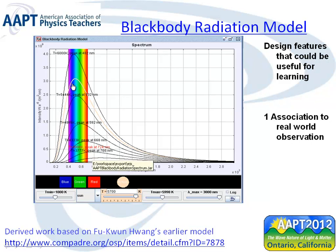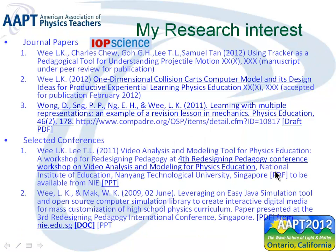This model is also from Fukun, and I particularly like it because it covers blackbody radiation. I found that another computer model released by Juan made it possible to see the resultant intensity colors as a result of a particular radiation spectrum emitting at a particular temperature. That's pretty nice.